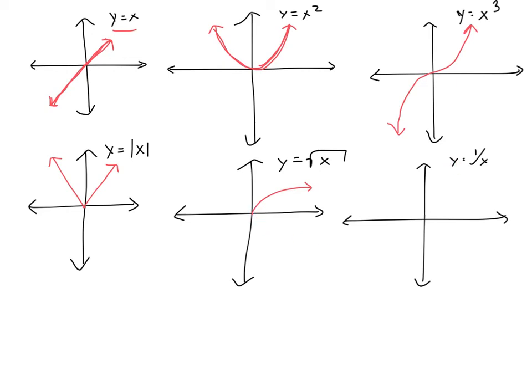And then lastly y equals 1 over x. So this point is 1 and 1, and negative 1 and negative 1. And then it looks like something like this, where I'm getting closer and closer to the x axis and closer and closer to the y axis, and then closer and closer to the y axis and closer and closer to the x axis here.